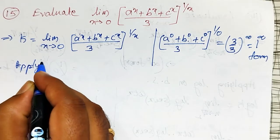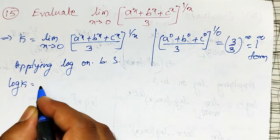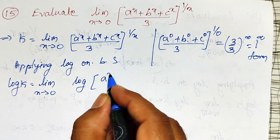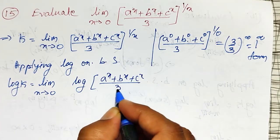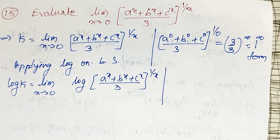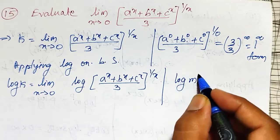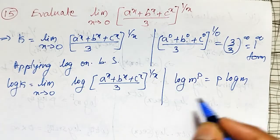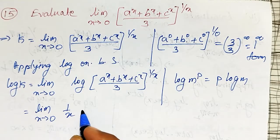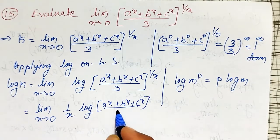Applying log on both sides, I get: log k = limit as x tends to 0 of log[(a^x + b^x + c^x) / 3]^(1/x). Using the property log(m^p) = p·log(m), I can write this as limit as x tends to 0 of (1/x)·log[(a^x + b^x + c^x) / 3].